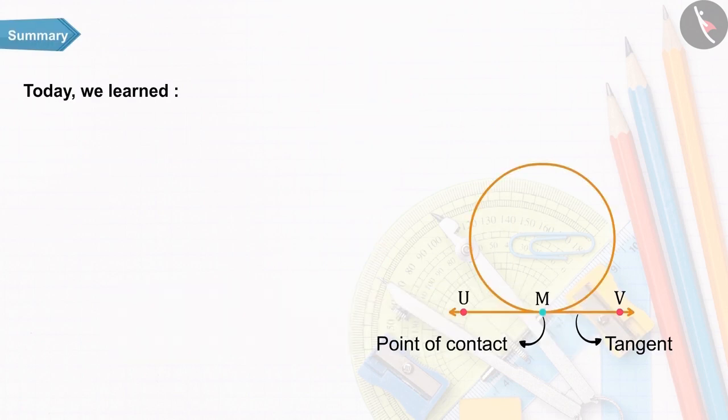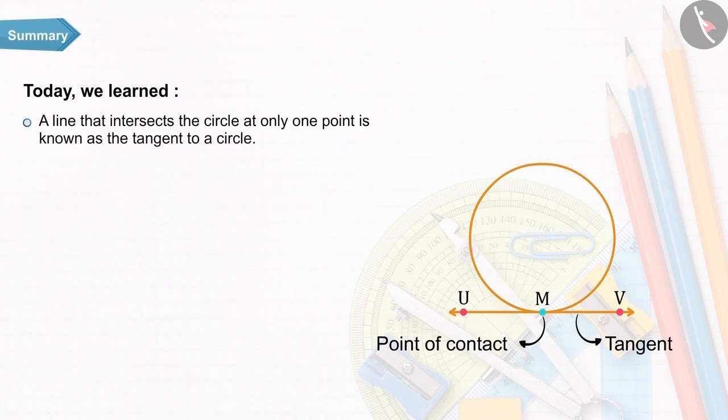Today, in this video, we learned the line that intersects the circle at only one point is called a tangent to a circle.